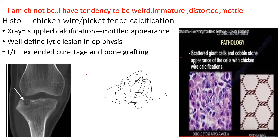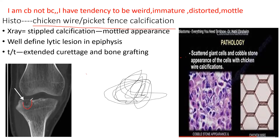Chondroblastoma is an epiphyseal tumor. Most importantly, in histology you see chicken wire or picket fence calcification. This type of calcification — like a chicken wire cage or picket fence — is the characteristic histological finding of chondroblastoma. Treatment is curettage and bone grafting.